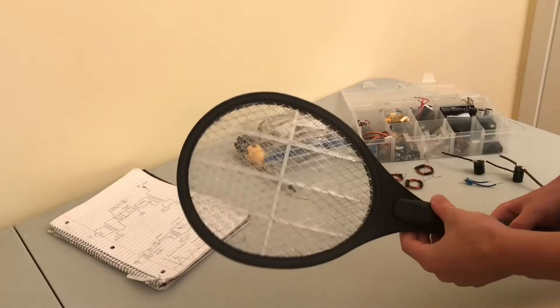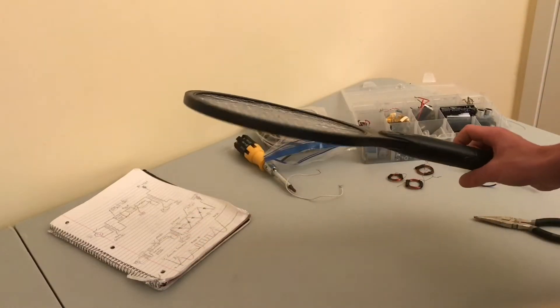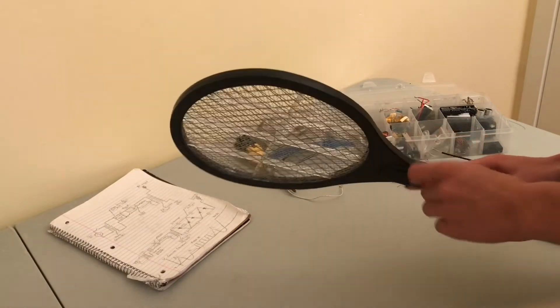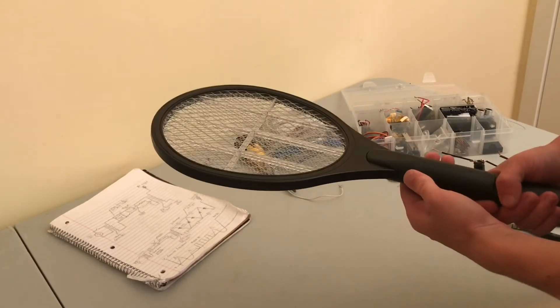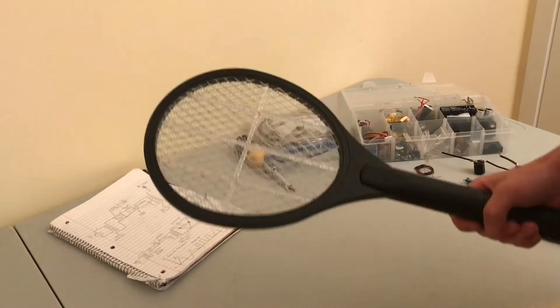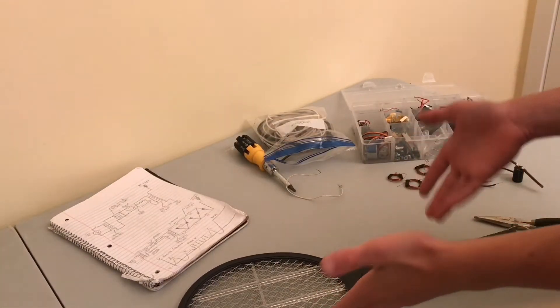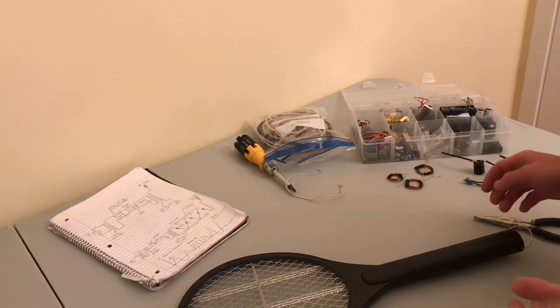So I recently saw a video where StyroPyro took one of these ordinary bug zappers, which outputs 2,500 volts, and he turned it into a huge high voltage death machine, which had an output of 200,000 volts. So what I want to try doing is upgrading one of these myself and seeing what kind of outputs I can get.